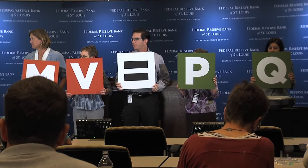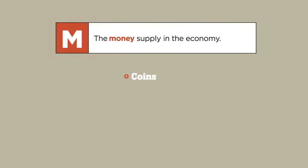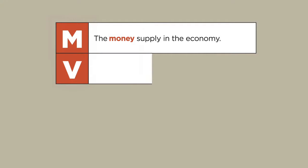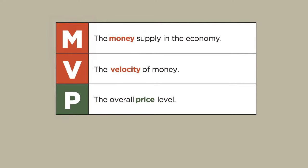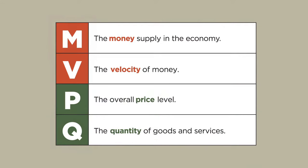I recruited five willing audience members as volunteers. Each was given a sign displaying one of five symbols forming the equation of exchange. Let's define our variables. M is the money supply — coins, currency, deposits in checking accounts, traveler's checks, anything you spend as money. V is velocity: the number of times per year that the average dollar is spent on goods and services. P is the overall price level — not individual goods, but the price level of that entire basket of all output sold in an economy. And Q is the quantity of goods and services produced, also known as output.